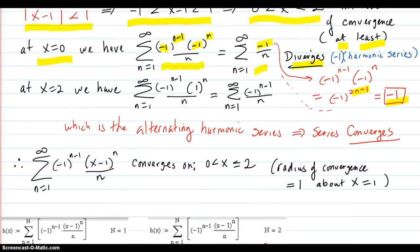What about 2 on the other end? At x equal to 2, you plug that in and you get this, which is equal to this. And that will be an alternating harmonic series: negative 1 plus 1, negative 1 plus 1, over n. Alternating harmonic series, and that series converges.